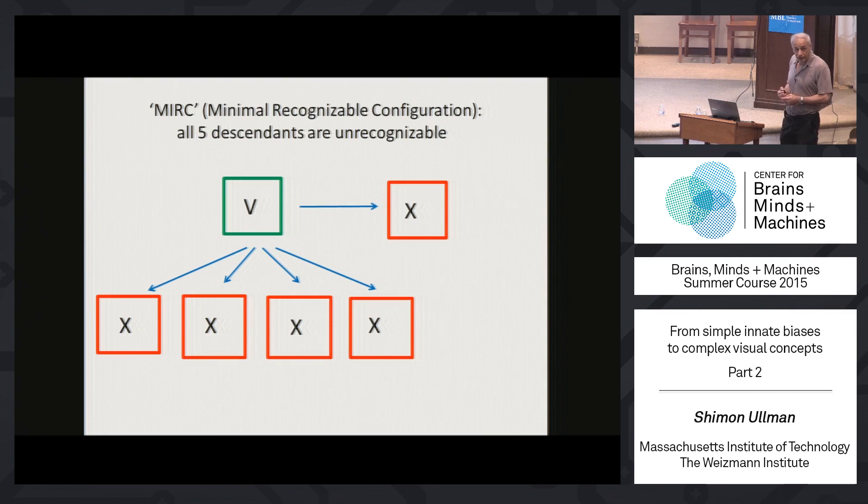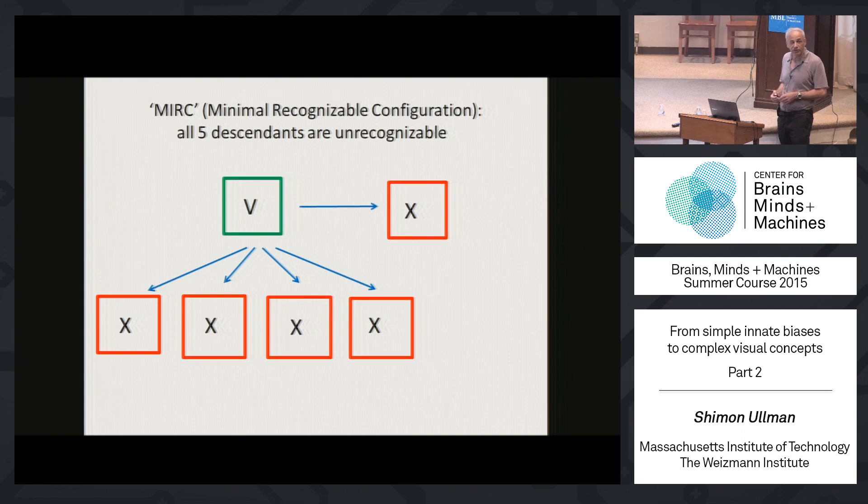In the tree, here is an image that is recognizable. We create five descendants, and none of the descendants is recognizable. So this parent is recognizable, nothing below is recognizable — it's minimal, because you can no longer reduce it either by resolution or by reducing the size. Any manipulation like this makes it unrecognizable.